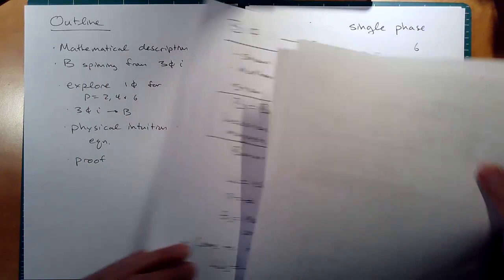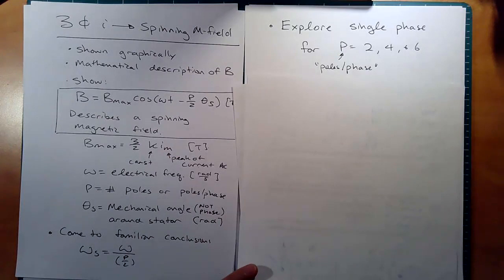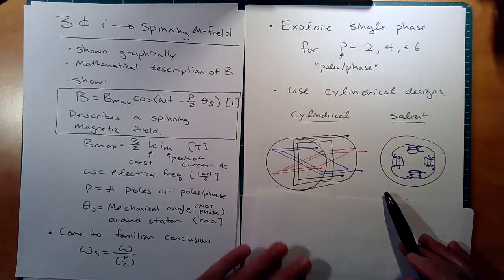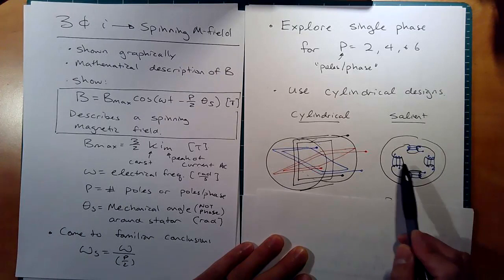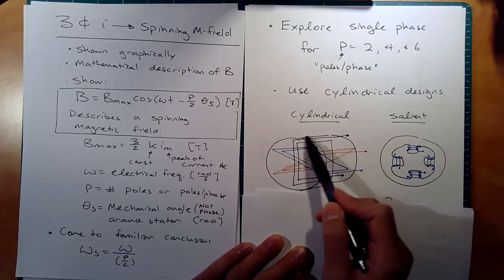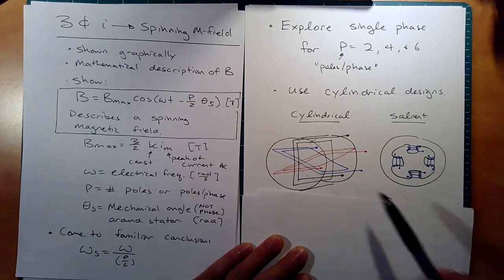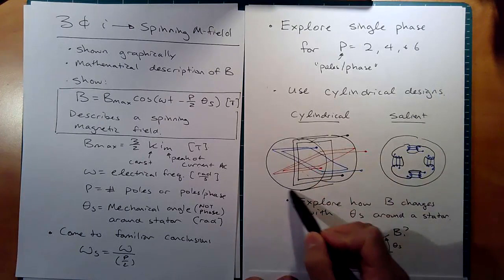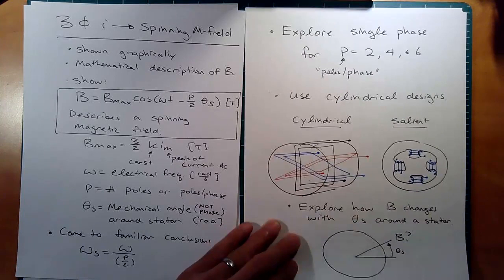Let's look at a single-phase system with different numbers of poles to see what intuition we can glean. I'm going to look at a cylindrical design. A cylindrical design versus a salient design: in the salient design, coils are wrapped around each tooth. In the cylindrical design, coils are wound down the cylinder length — so this would be your A, B, and C phase. We're going to look at how B changes with different positions theta s around the stator — this is the front view.